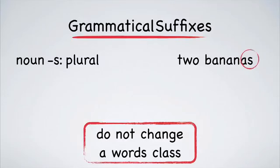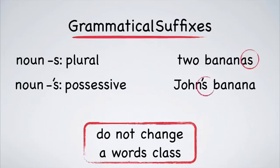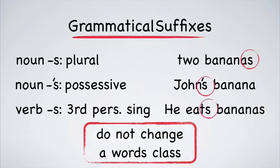One banana, two bananas. The possessive s: John's bananas. The third person s: he eats bananas. These are not all of the grammatical suffixes, but I hope it's enough to give you an idea of what they are. Do not change the class of a word.